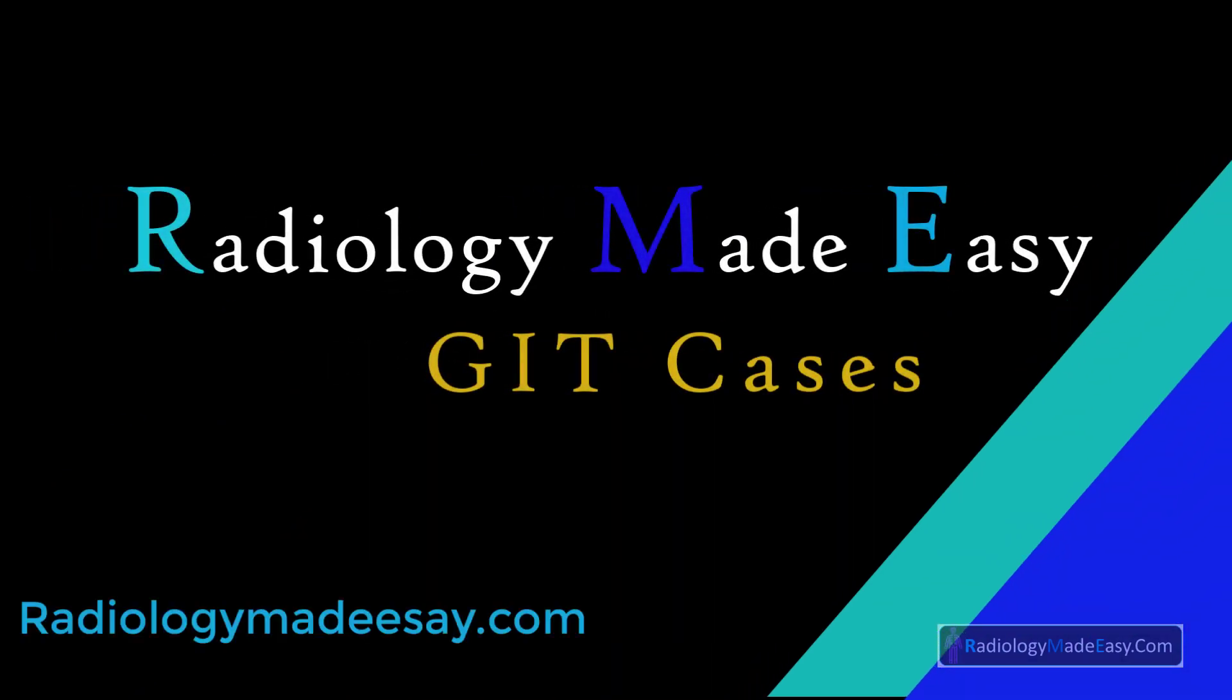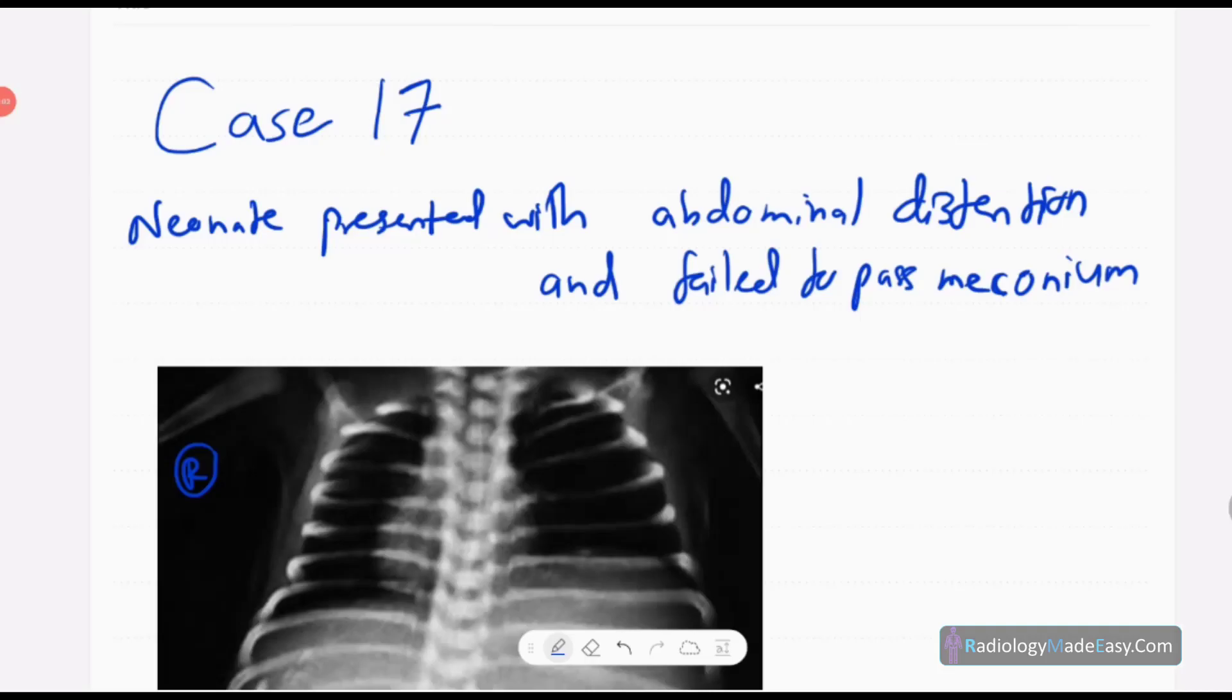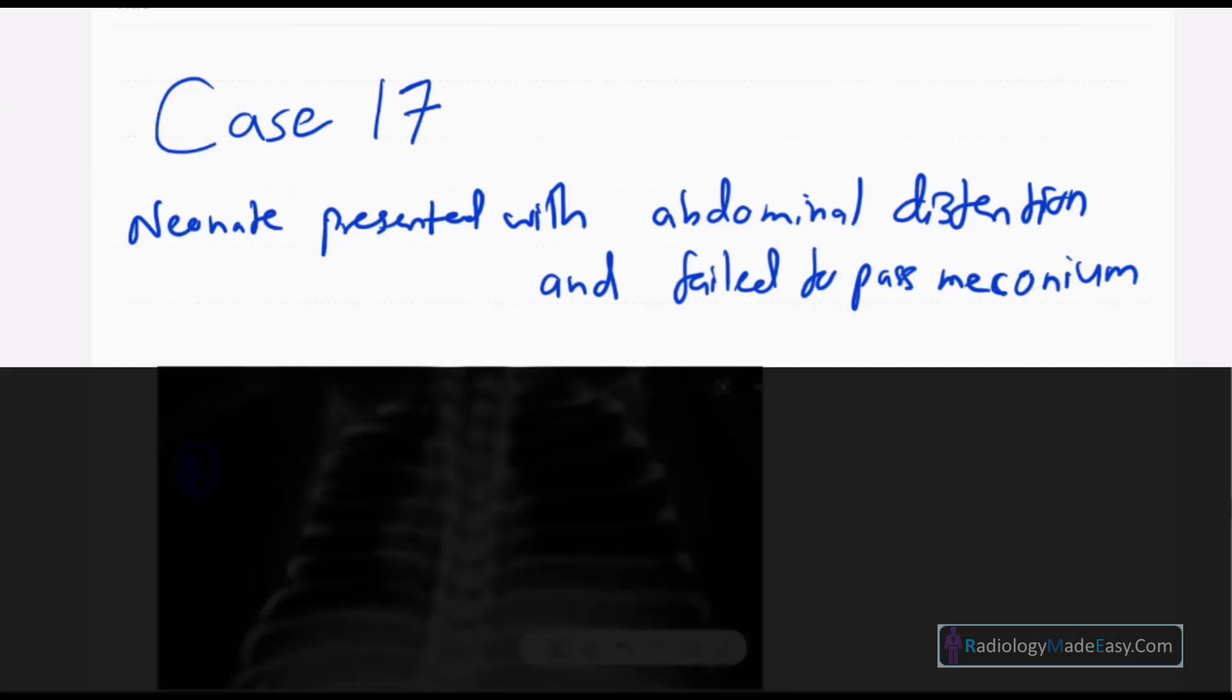Hello everyone, welcome back to Radiology Made Easy, your all-time favorite YouTube channel. Let's see today's case. This is case number 17 in abdominal radiology. Today our patient is a neonate presented with abdominal distension and failed to pass meconium.